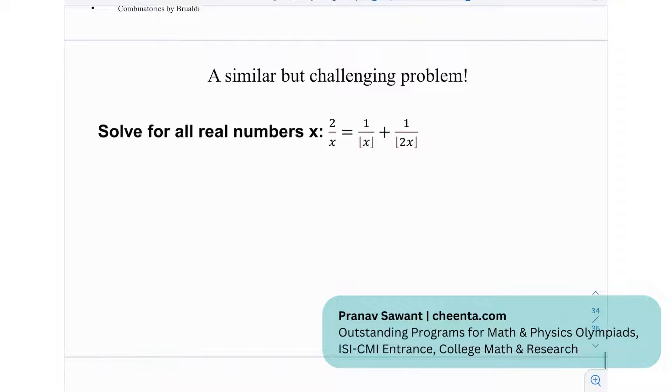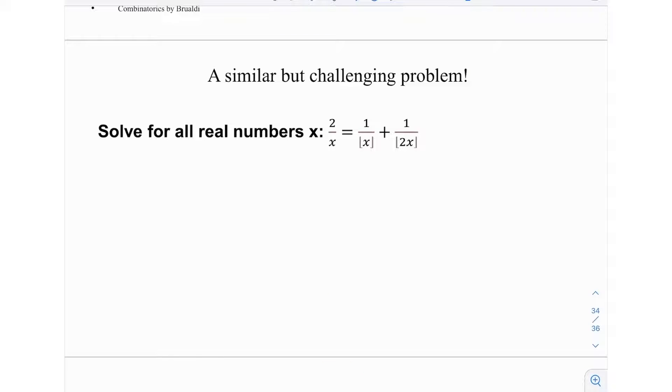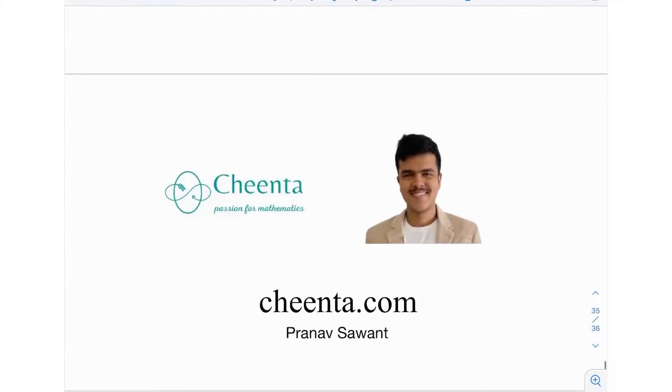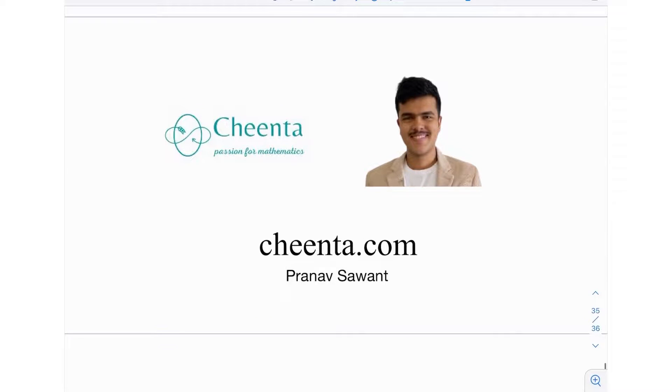We have here a similar but challenging problem. This is again an equation involving the floor function. We need to solve for all real numbers: 2/x = 1/⌊x⌋ + 1/⌊2x⌋. So yeah, maybe give this a go and see if you want to solve this. If you do, let me know in the comment section. And until then, I'll see you in the next video. Thank you very much and bye-bye.